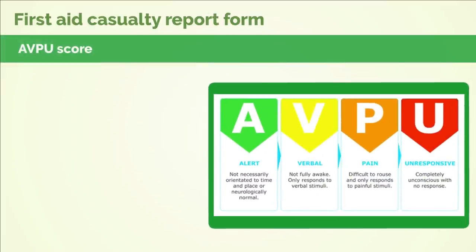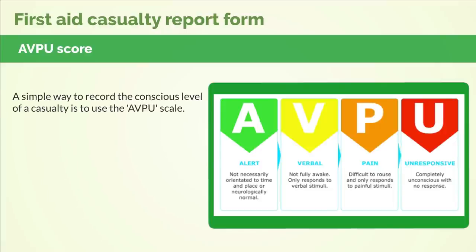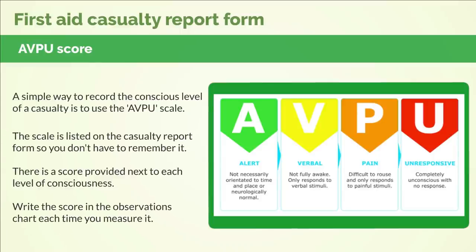AVPU score. A simple way to record the conscious level of a casualty is to use the AVPU scale. The scale is listed on the casualty report form, so you don't have to remember it. There is a score provided next to each level of consciousness — write the score in the observations chart each time you measure it.